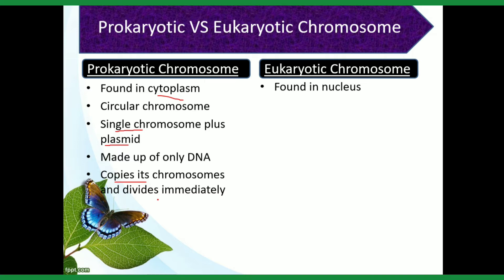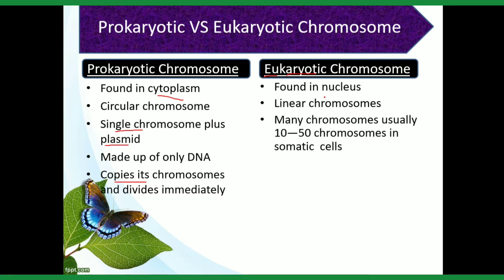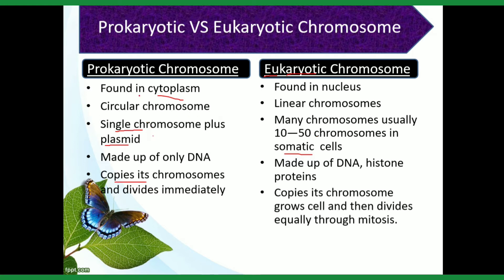The eukaryotic chromosome is found in the nucleus — eukaryotic means 'true nucleus,' so the cell which contains a true well-developed nucleus is called a eukaryotic cell, and its chromosome is found in the nucleus. It has linear chromosomes, and many chromosomes — usually 10 to 50 chromosomes in somatic (body) cells. Eukaryotic chromosomes are made up of DNA and histone proteins. There are no histone proteins in prokaryotes — histone proteins are present only in eukaryotes. The eukaryotic cell copies its chromosomes, grows, and then divides equally through mitosis.